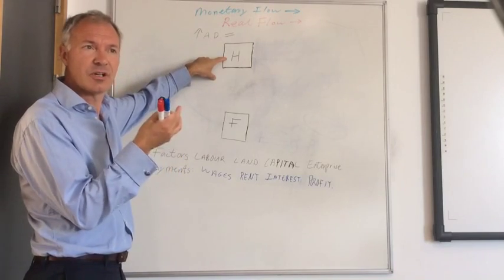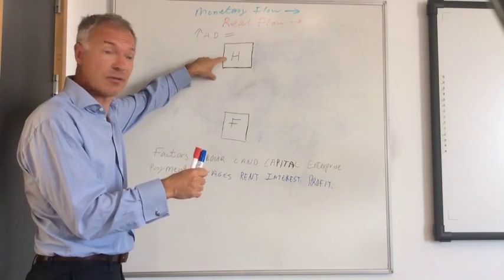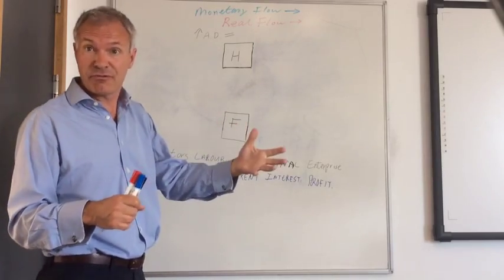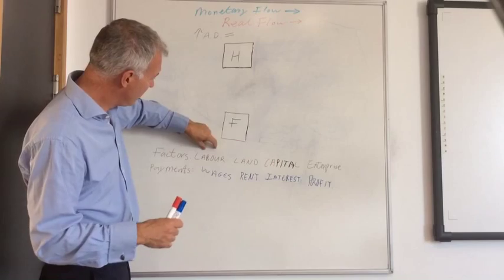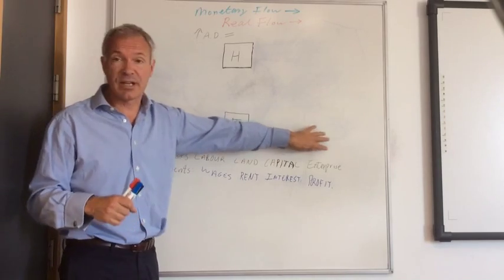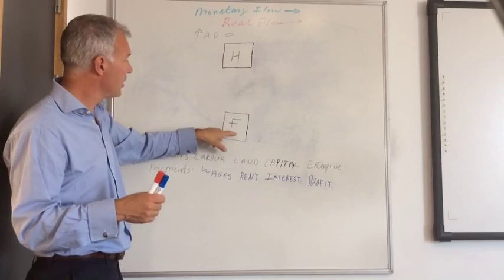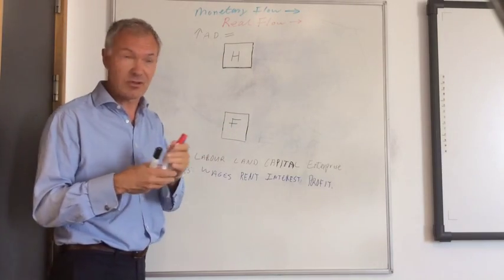We've got households and households own all the factors of production. There are four, of course, as you know, maybe from micro and maybe even from geography. You've got labour, land, capital and enterprise. And these are owned by the household, and these are combined by the firms to produce goods and services.